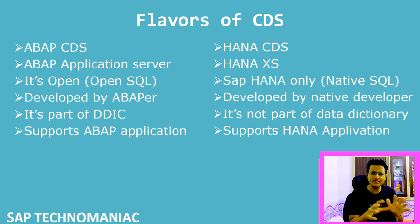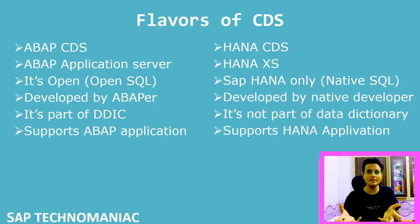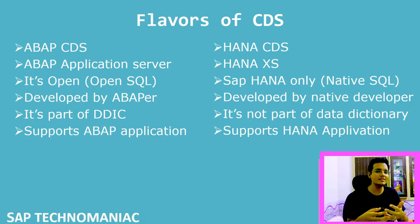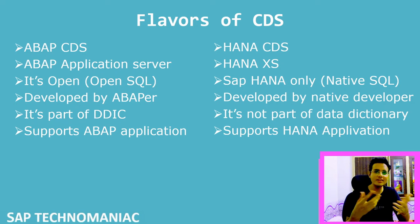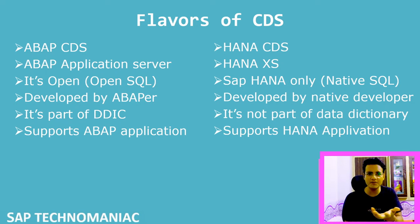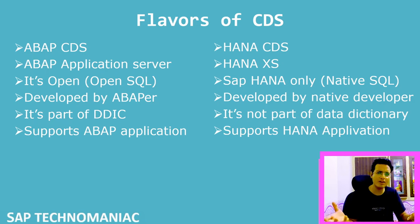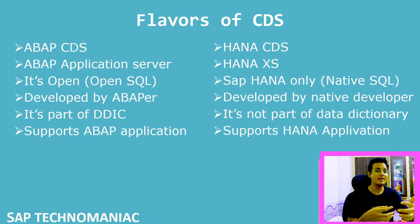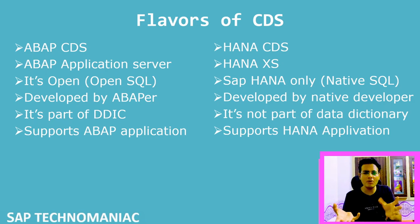ABAP CDS is a part of DDIC itself. Before CDS, we created models using the dictionary — creating simple views by combining tables and displaying results. Those were the simpler forms of models we used to create.